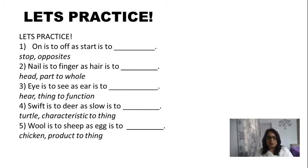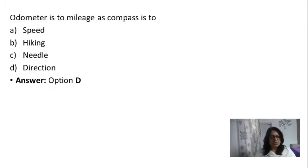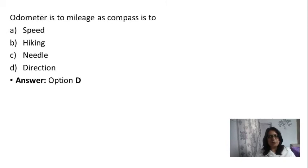Wool is to sheep as egg is to? Now here we are looking at the product or the thing that we get from that particular thing. So from sheep we get wool, so who do we get an egg from? The most logical answer: chicken, yes.